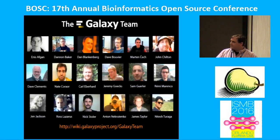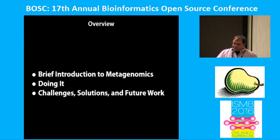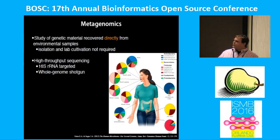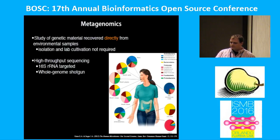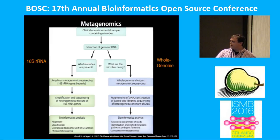I also want to recognize the Galaxy team as my other co-authors. If you're not familiar with what metagenomics is, it's a study of genetic material recovered directly from environmental samples. It's important that we're not actually doing isolation or cultivation, because in both those processes you'll lose organisms. There are two different types of metagenomics branches: you can do a 16S gene targeted approach, or you can do a whole genome shotgun approach.